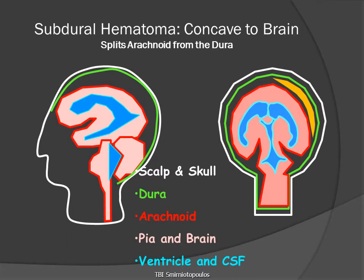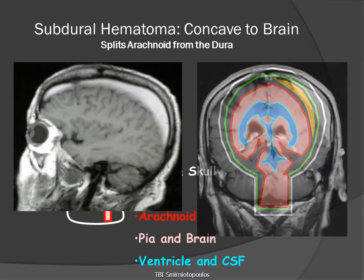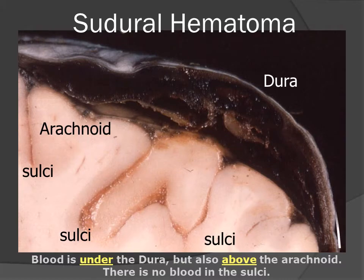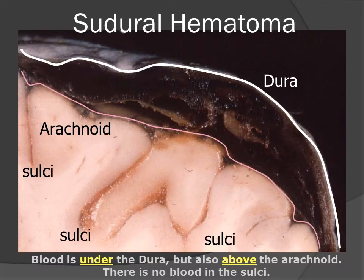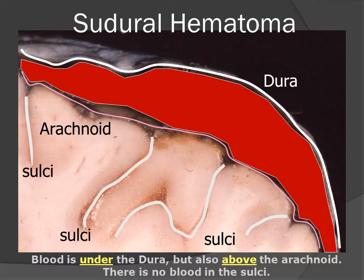A subdural hematoma is splitting the arachnoid from the dura. The actual location is therefore under the dura, but over the underlying arachnoid membrane. Subdural hematomas cross the sutures and will wrap around the cerebral hemisphere following the arachnoid as it surrounds the brain. This gross picture illustrates a subdural hematoma overlying the patient's left hemisphere. In this coronal section, we can see the white membrane of the dura, the arachnoid membrane, and the subdural hematoma between these two layers. Notice that the sulci do not contain any blood — the blood is prevented from entering the sulci by the arachnoid membrane.